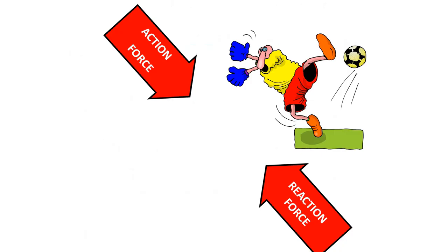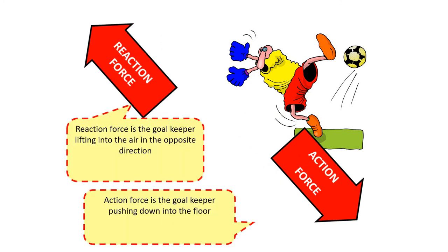So here you can see the example of a footballer. So you've got the action force, the foot is pushing down towards the right. And therefore the goalkeeper is moving towards the left there. You can see the reaction force is the goalkeeper lifting into the air. The action force is the goalkeeper pushing down onto the floor in order to move.